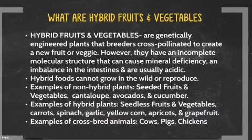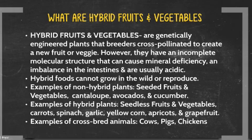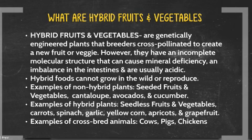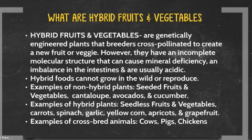Do you know the difference between hybrid and non-hybrid fruits and vegetables? Hybrid fruits and vegetables are genetically engineered plants that breeders have cross-pollinated to create a new fruit or veggie, which basically means it is an unnatural, man-made fruit or vegetable. Hybrid fruits and vegetables have an incomplete molecular structure that can cause mineral deficiency, an imbalance in the intestines, and are usually acidic. Hybrid foods cannot grow in the wild or reproduce.